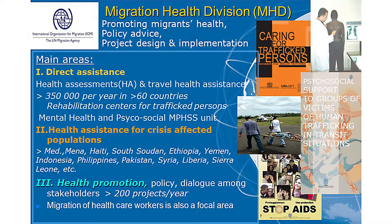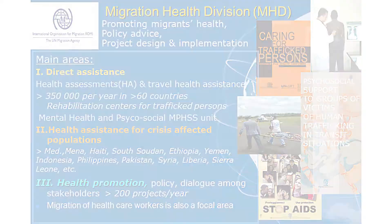The first pillar is direct assistance to migrants, which includes health assessments for resettlement and relocation as it is in Europe. We have a mental health and psychosocial unit as well. Then we have a sub-department that works in emergencies, and then we have the general area of health promotion.